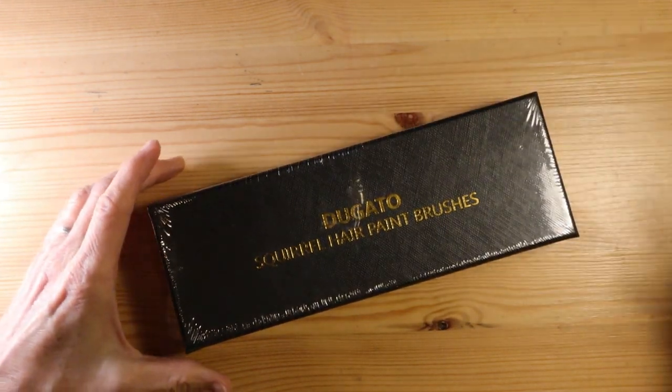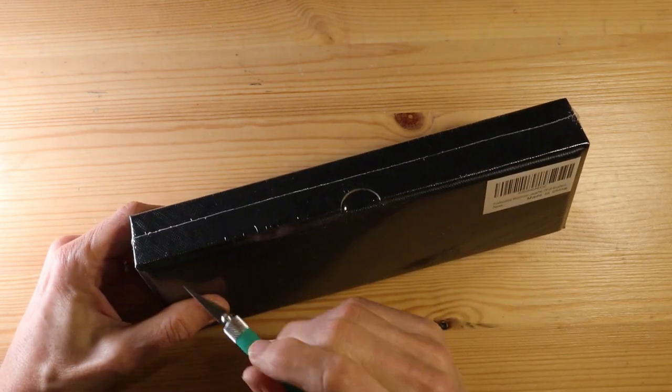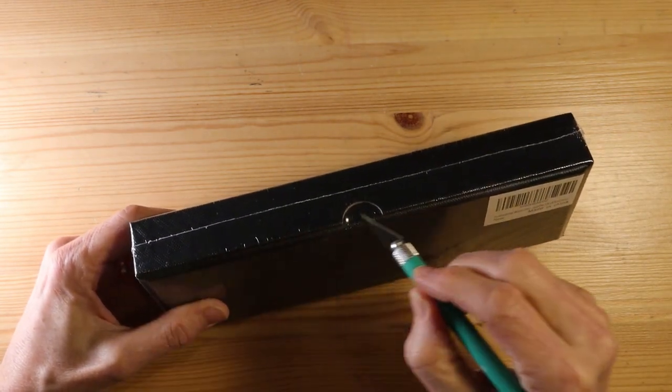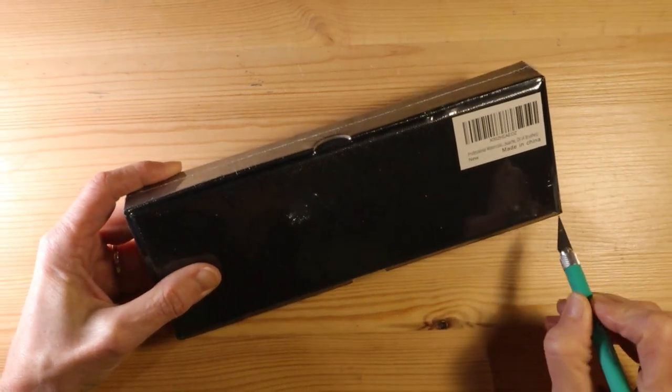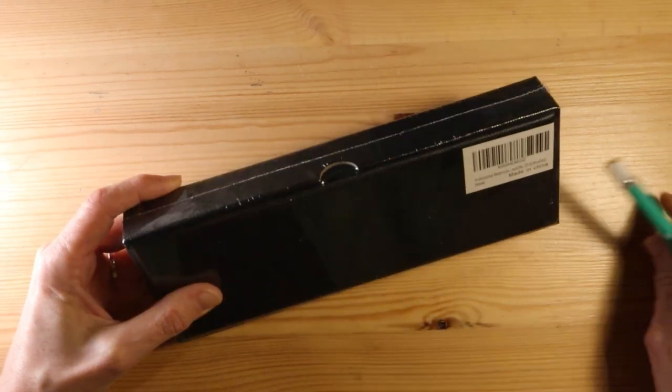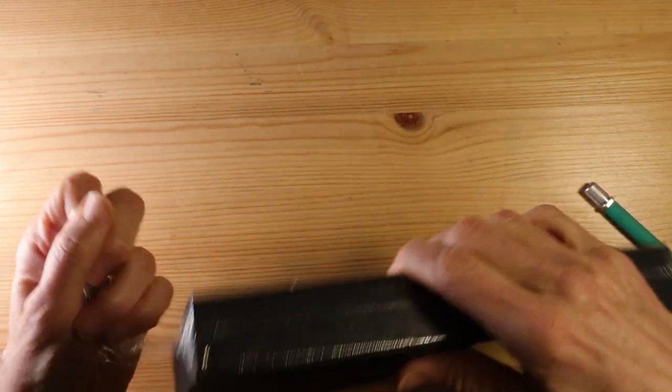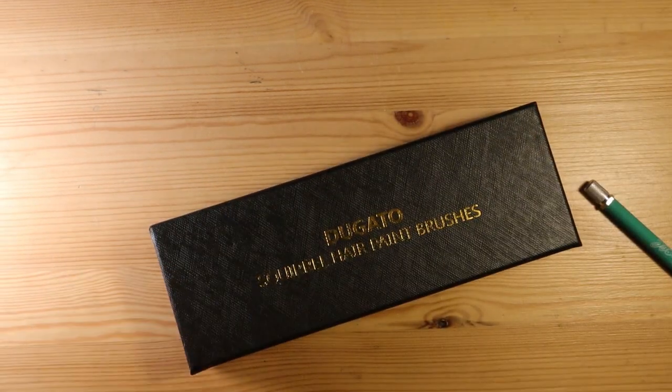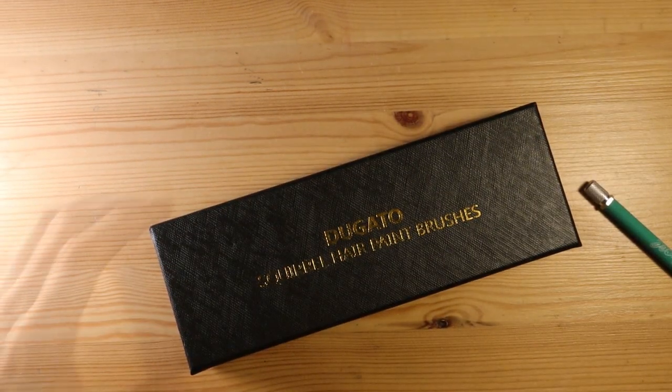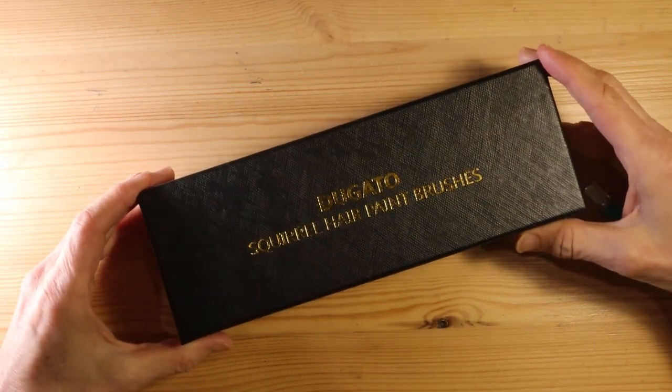They are the Dugato squirrel hair paint brushes for watercolor, and I'm just going to go ahead and open them up here. They are made in China. This particular set includes four brushes and they were $37 US. Prices can vary depending on when you're watching this video or where you're purchasing them.